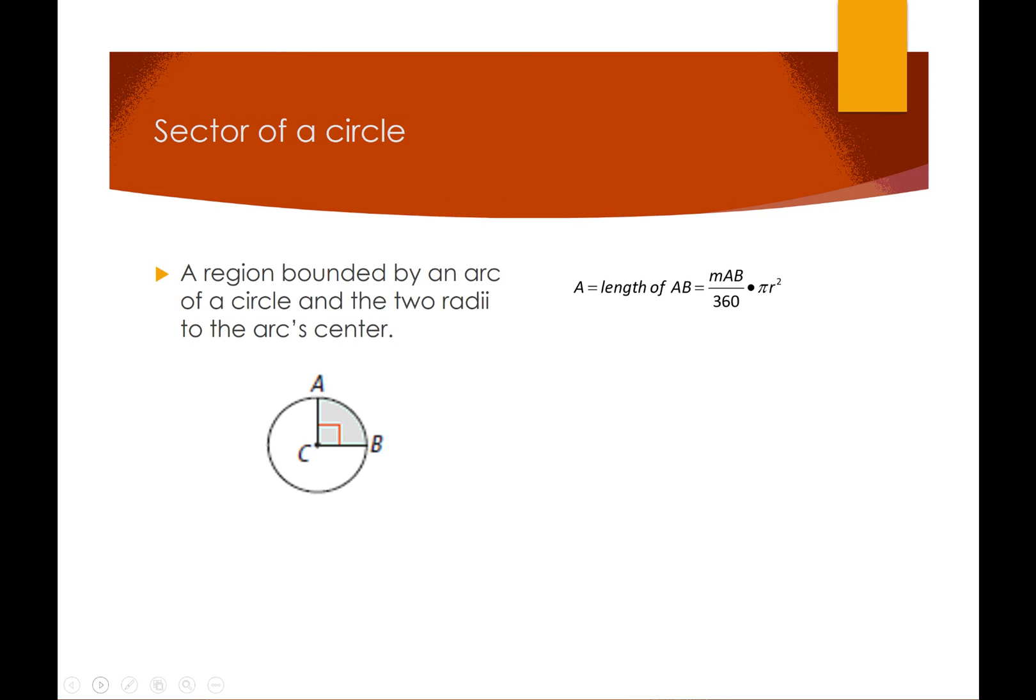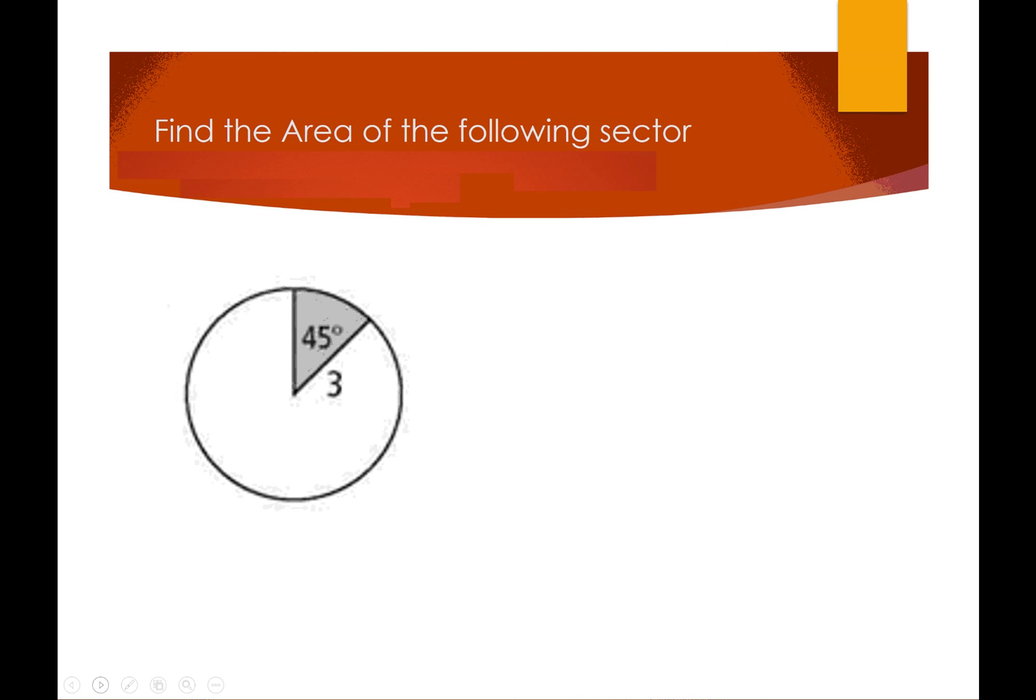Just kind of a quick review. Now a sector of a circle is a region bounded by an arc of a circle and two radii to the arc center. So basically it's the inside of a central angle that's enclosed in the circle. And our area is going to be the measure of arc AB over 360 times πr².